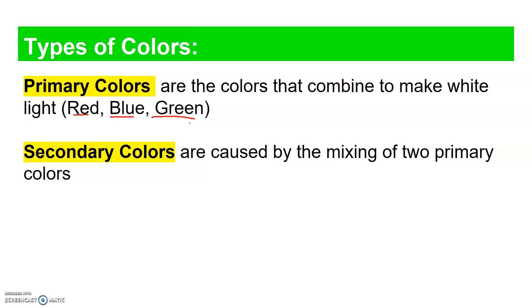Primary colors are red, blue, and green. There are only three of them. These are the colors that combine to make white light. Secondary colors are the colors made by mixing two of these primary colors, and those are magenta, yellow, and cyan.